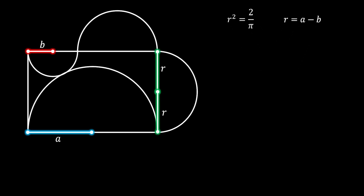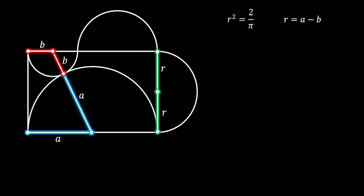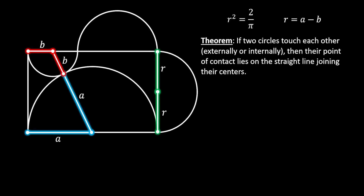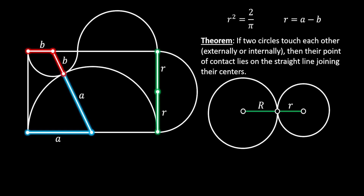Now, let's continue by rotating both radii of the big and small circle to the point of tangency. If we do this, those two radii will form a straight line. We know this by using the circle theorem, which states that if two circles touch each other — externally or internally — their point of contact lies on a straight line joining their centers. Now, let's take a look at the center of our small inscribed circle and pull a vertical line from this center downwards to the bottom side. If we slide the upper radius of this semicircle, we can see that the remaining segment of the bottom blue radius will be equal to the difference between those two radii — so it equals A minus B.